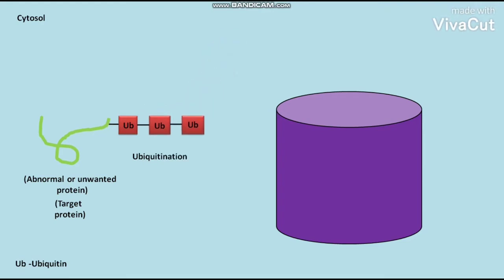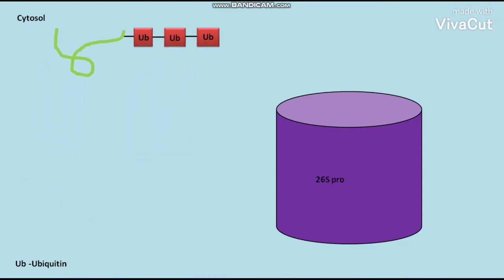We will discuss more about this ubiquitination process in this video. After ubiquitination, the polyubiquitinated target protein moves towards the 26S proteasome.